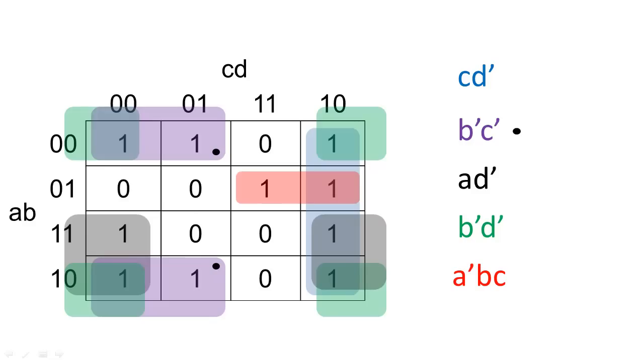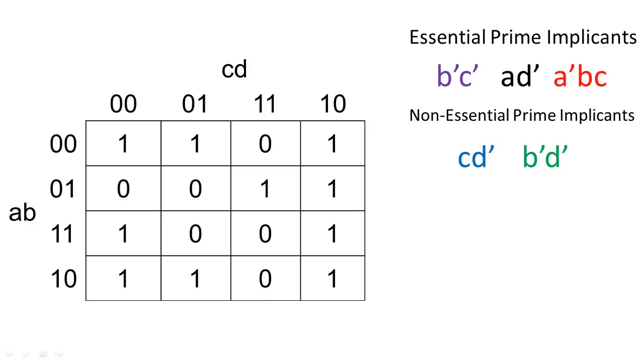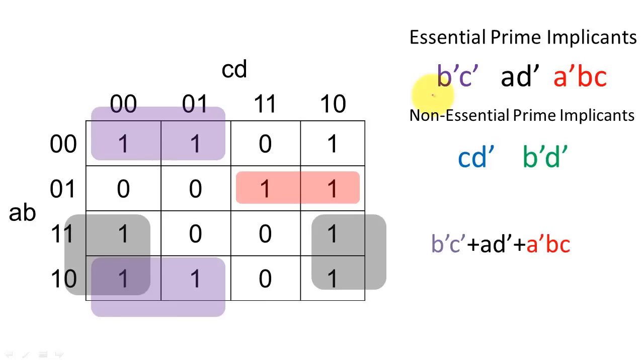Some of the cells here are covered by only one prime implicant. These dotted prime implicants are essential because they are the only prime implicants that cover the dotted cells. The remaining other two prime implicants are non-essential prime implicants. To construct a minimal expression, we will automatically include our essential prime implicants in the final Boolean expression.